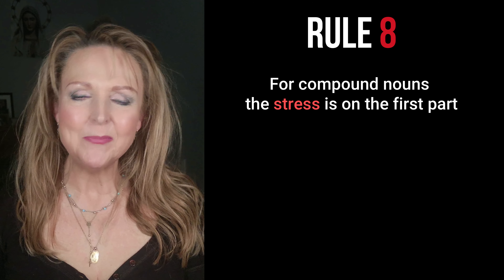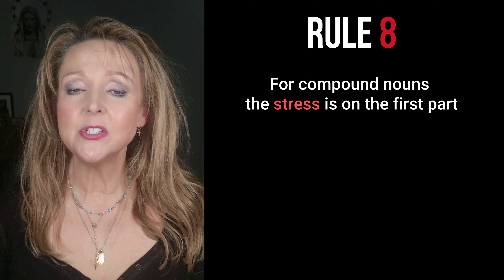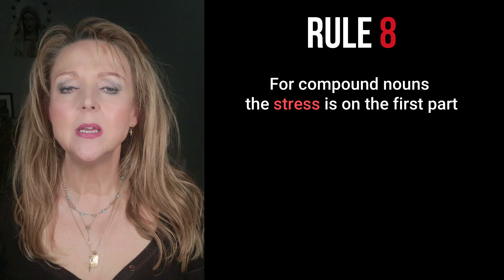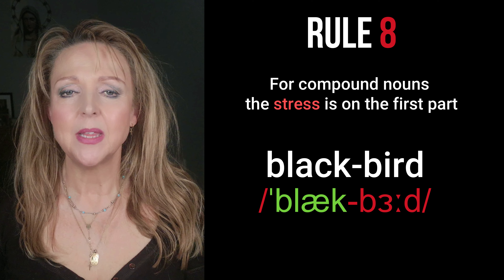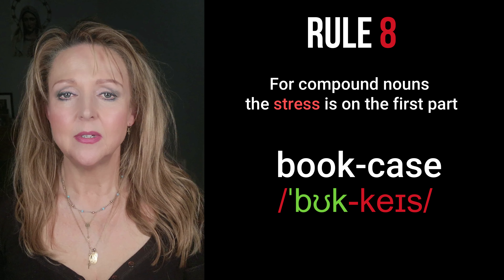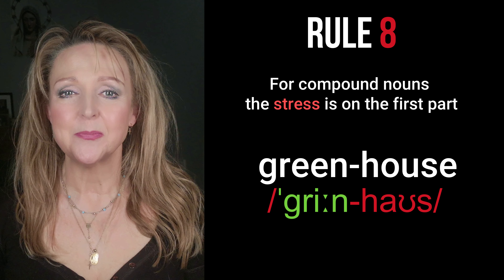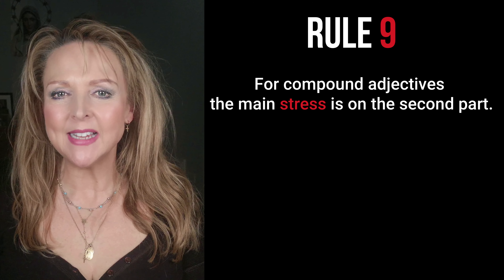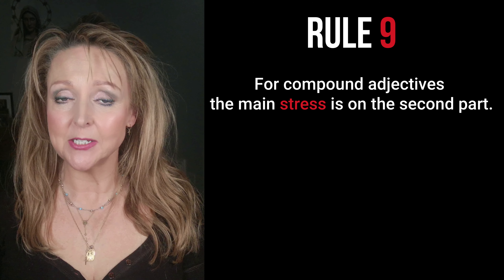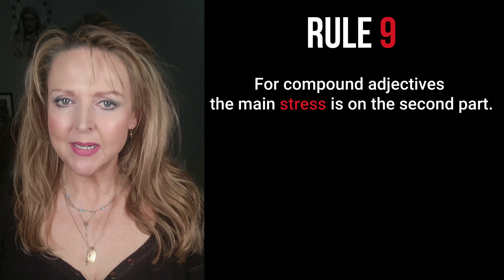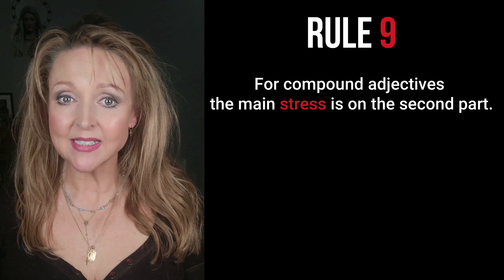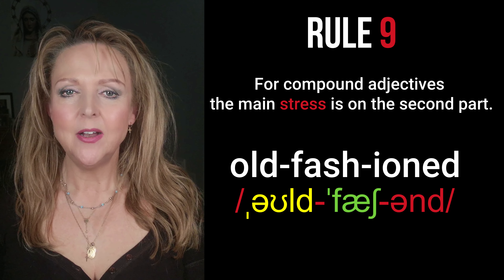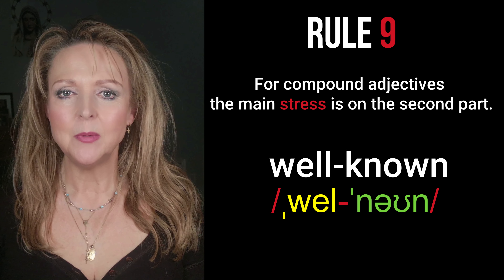Rule number 8: For compound nouns, the stress is on the first part. For example: blackbird, bookcase, greenhouse. Rule number 9: For compound adjectives, the main stress is on the second part. Remember, compound adjectives act as an adjective to describe nouns. For example: old-fashioned, well-known.